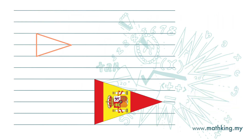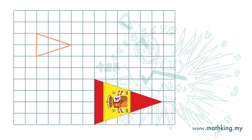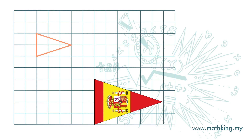Now let's look at this example. The one on the left is the scale drawing and the one on the right is the actual flag. One unit on the drawing represents 2 units on the actual flag, so the scale of this drawing is 1 to 2. Or we can do it this way: the length of the drawing is 2 while the length of the actual flag is 4. We can get the scale by taking the ratio of the length on the drawing to the length of the actual flag.